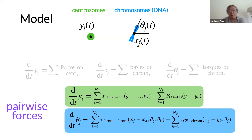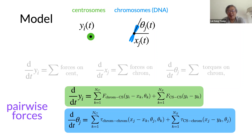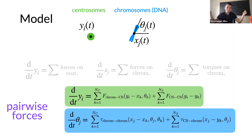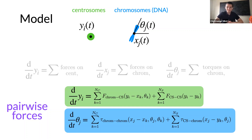A natural question: what happened to the long microtubule fingers? Rather than modeling the fingers explicitly, we're thinking about average forces they would exert. Whatever they're doing, they exert some average effective force, and that's what we call the force. We're not including individual fingers — we just say whatever they're doing can be baked into this effective force. The finger touching the DNA would be the centrosome-to-chromosome term.